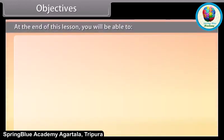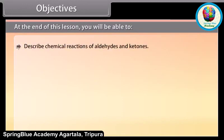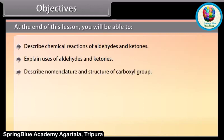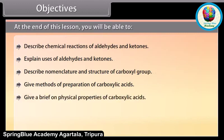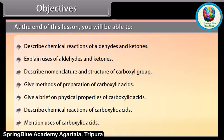Objectives. At the end of this lesson, you will be able to: describe chemical reactions of aldehydes and ketones; explain uses of aldehydes and ketones; describe nomenclature and structure of carboxyl group; give methods of preparation of carboxylic acids; give a brief on physical properties of carboxylic acids; describe chemical reactions of carboxylic acids; and mention uses of carboxylic acids.